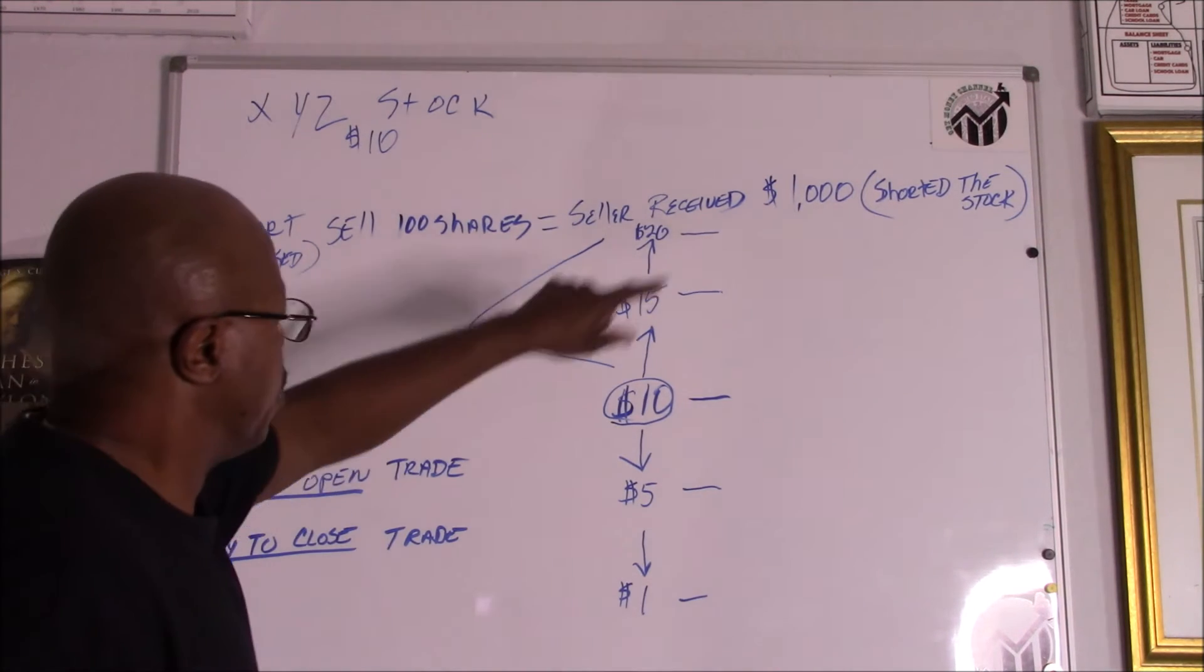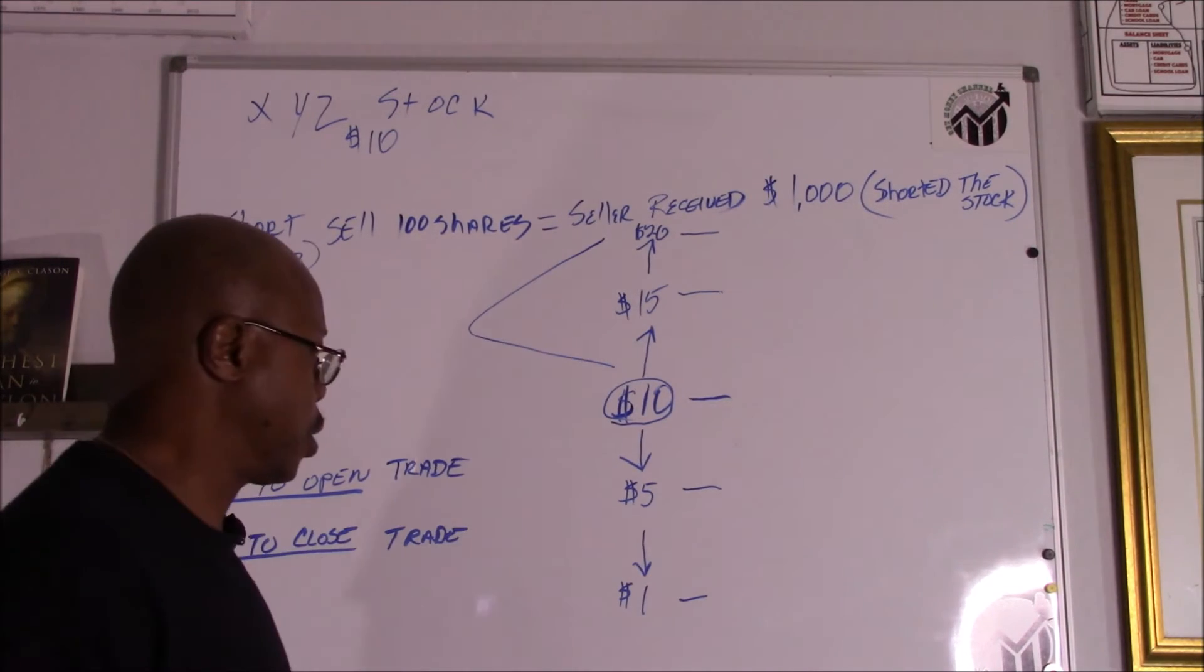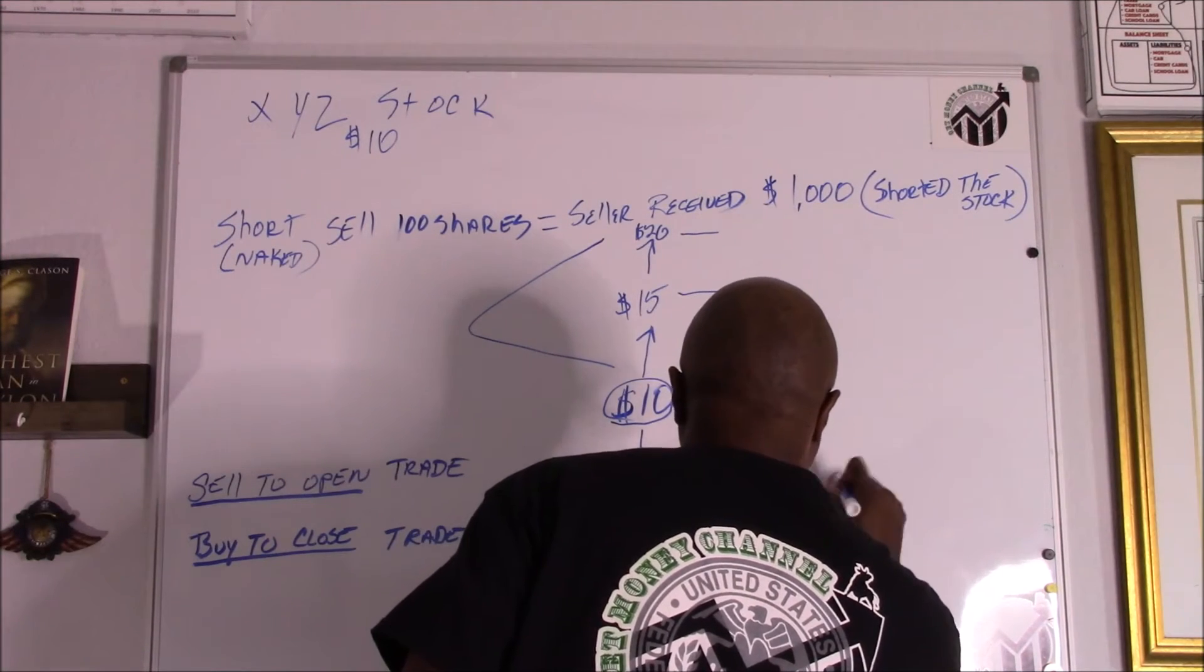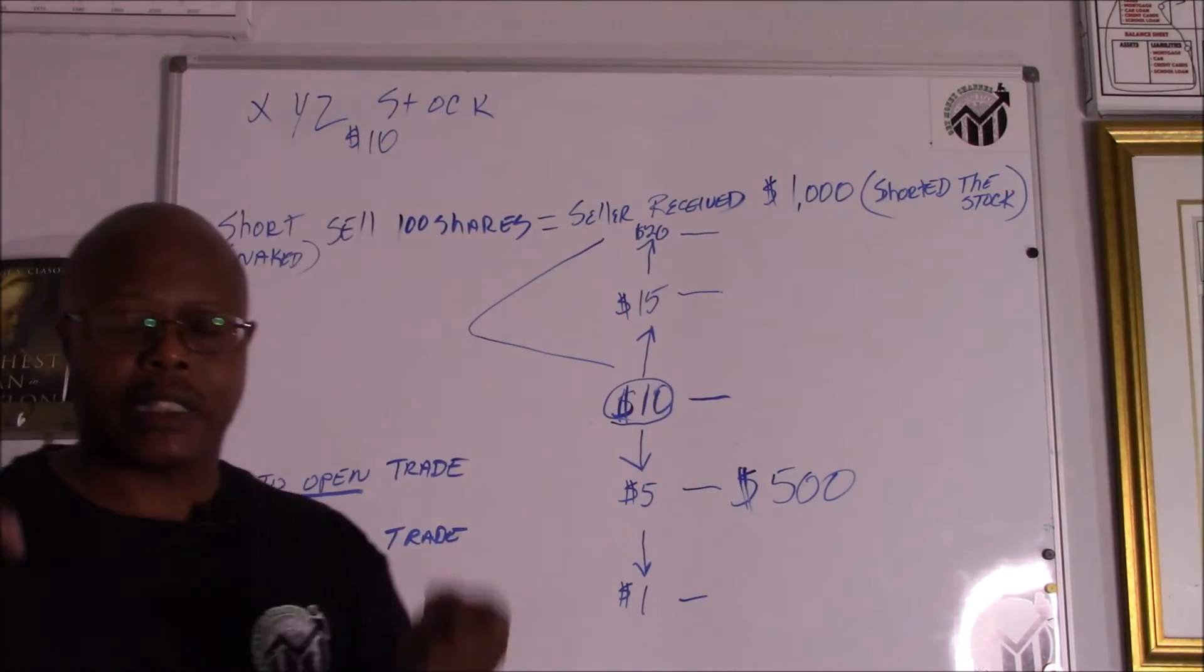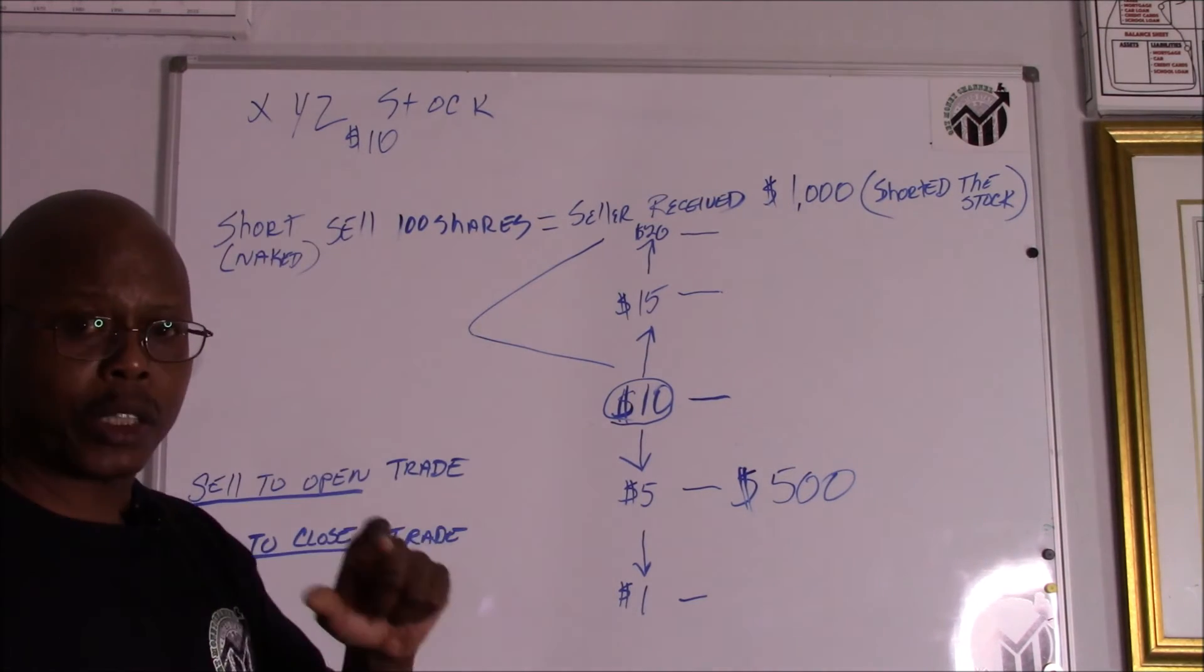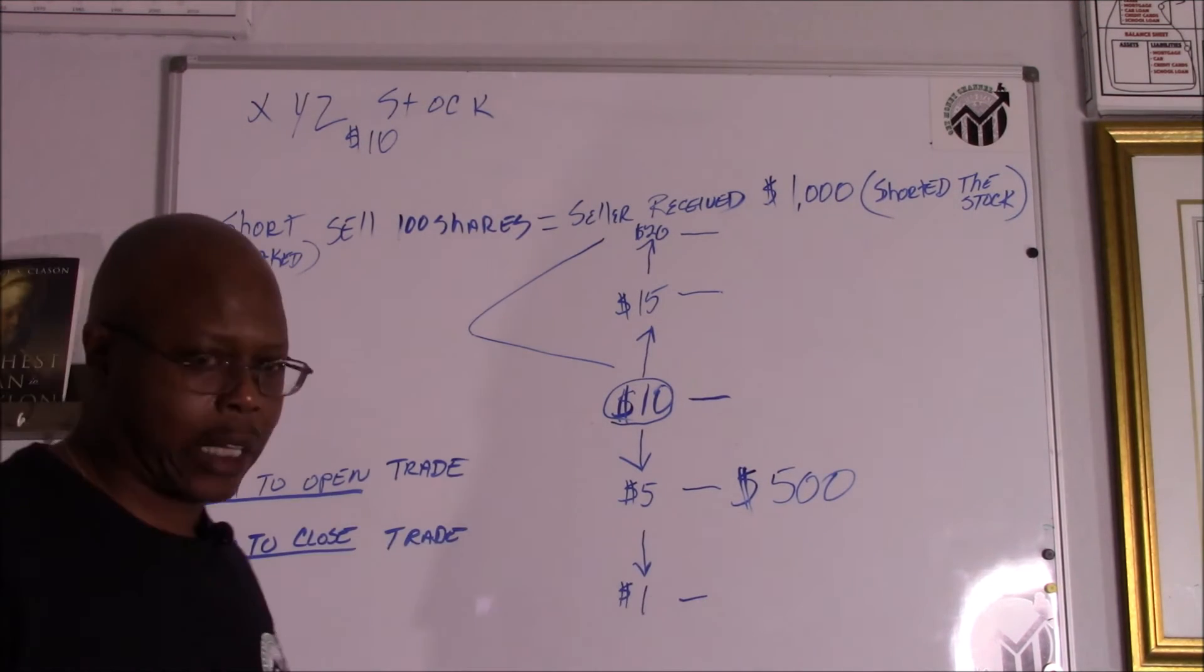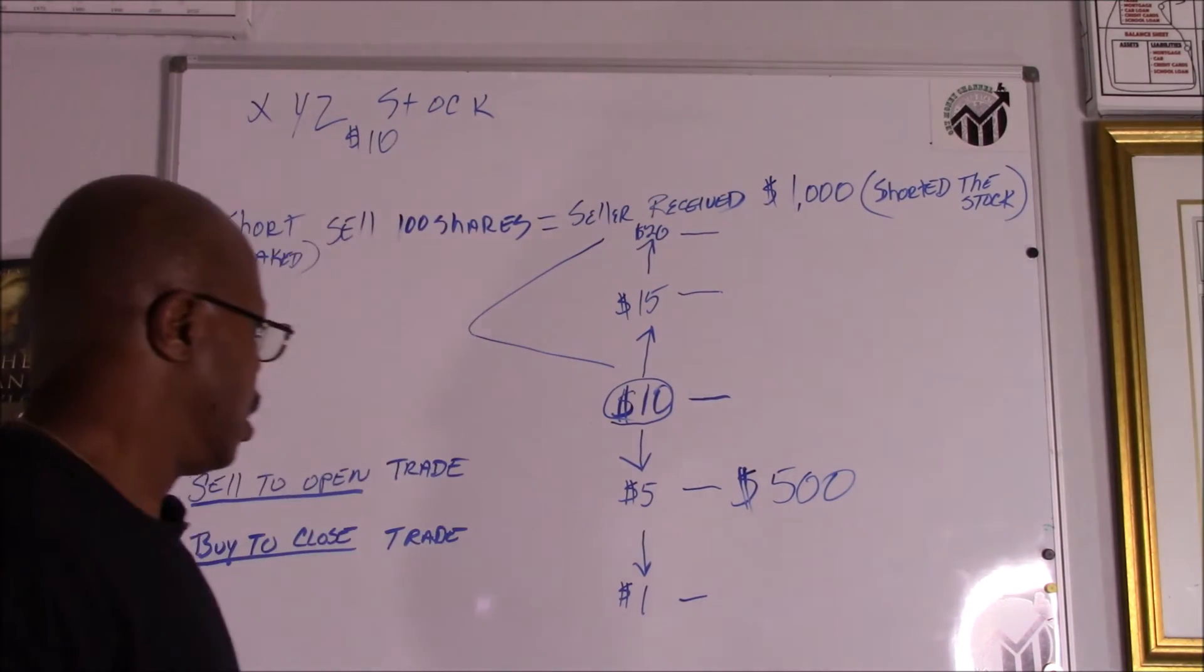So the person shorted the stock here. What they're hoping for is for the price of the stock to go down. Let's say it goes down to $500. Now the stocks that he owned is worth $500. That $1,000 that he received is actually in their account but it's held under collateral. In order to close it out and release that collateral, they got to buy. If it's at $5 and they decide to go ahead and buy in order to close out that transaction, they'll make $500.